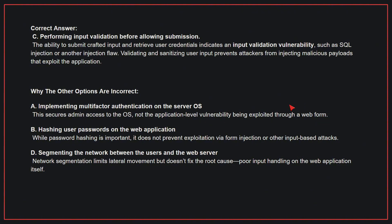Why the other options are incorrect: A — Implementing multi-factor authentication on the server OS. This secures admin access to the OS, not the application-level vulnerability being exploited through a web form. B — Hashing user passwords on the web application. While password hashing is important, it does not prevent exploitation via form injection or other input-based attacks. D — Segmenting the network between the users and the web server. Network segmentation limits lateral movement but doesn't fix the root cause: poor input handling on the web application itself. Therefore, the correct answer is C.